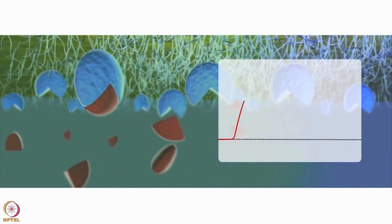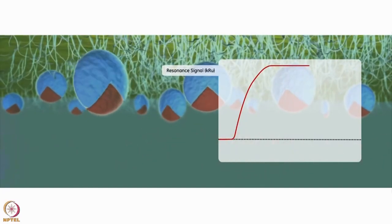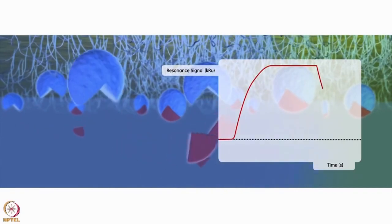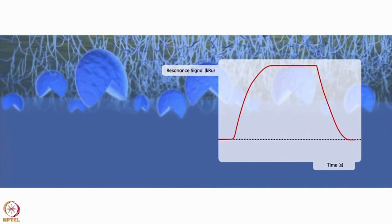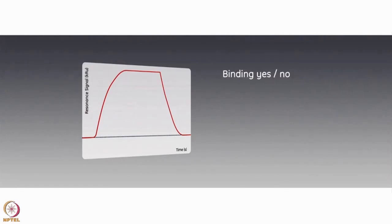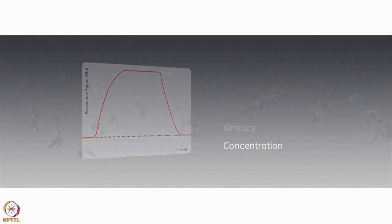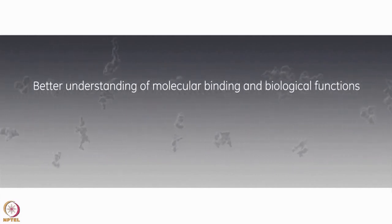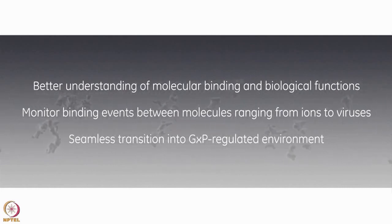The result from the detection of change in refractive index is displayed as a sensorgram, where the binding response on the y-axis is plotted against time on the x-axis. Since light does not penetrate the sample, analyses can be performed on colored, turbid, or opaque samples. From studying the shape of the sensorgram, binding yes or no, specificity, affinity, kinetics, and active binding concentration can be determined. The sensorgram provides real-time information about the entire interaction, giving a wealth of information about your binding — all without using labels.